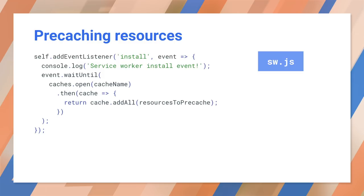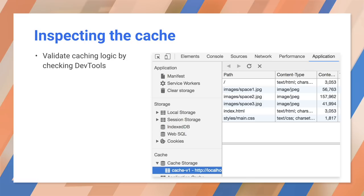But we have a problem. All of this asynchronous work is happening inside an event handler. When you call caches.open, it starts working in the background and returns immediately. Unless we do something to prevent it, the install event handler would return before the cache is ready — and that would be bad. We can fix this by wrapping the code in event.waitUntil, which will wait for the last promise in the series to complete before returning control to the event handler. Now, if you run Lighthouse again, you should see that the app has a service worker. And if you open the Chrome developer tools, you can look at the contents of the cache — all of your files are in there.